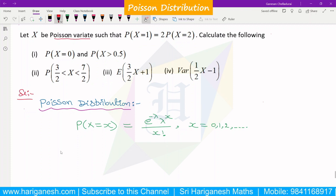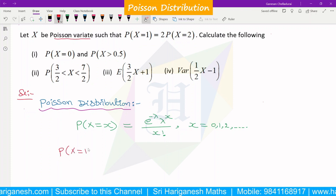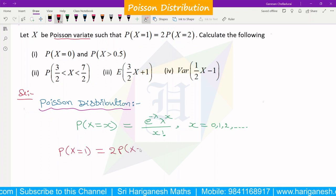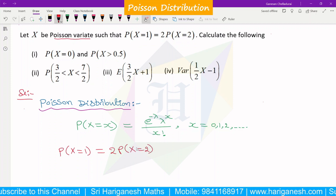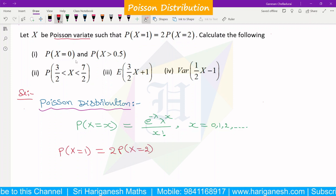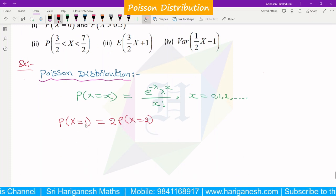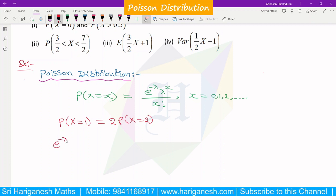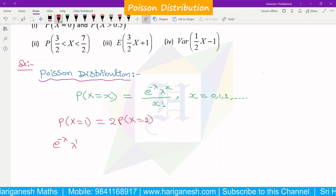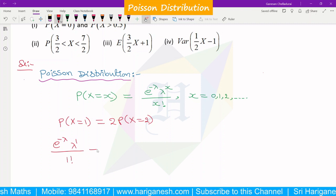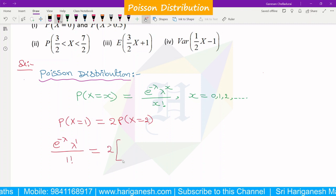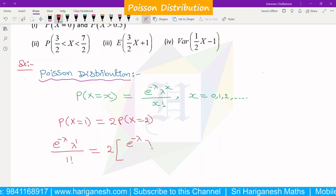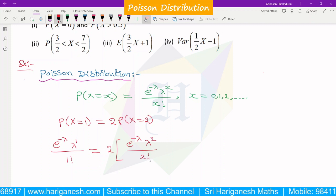The probability mass function is P(X = x) = e^(-λ)λ^x / x!. P(X = 1) is equal to twice P(X = 2). So if we use this, we will get lambda. P(X = 1) will be e^(-λ)λ^1 / 1! = 2 × P(X = 2) = 2 × e^(-λ)λ^2 / 2!.